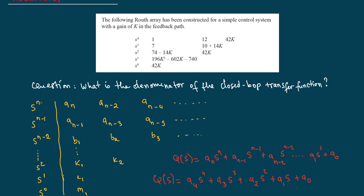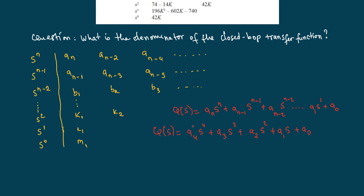So for S^4, then it will be a_4, a_2, and then a_0, right? So let's write it that way. Let's follow that format and then have S^4, S^3, S^2, and then S^1. I'm just going to put a_4 here, a_2, and then a_0. For S^3, I have a_3, a_1, and that's it, right? So this is, not nine.